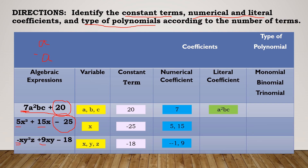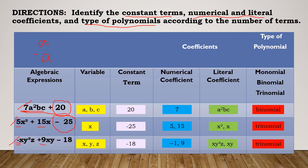For the literal coefficients, we write the variables with their exponents. The first term of polynomial 1 has literal coefficient a²bc. In the second polynomial we have x² and x. For the third polynomial, the first term has literal coefficient xy²z and the second term has xy. Since the first polynomial has two terms, it is a binomial. The second and third polynomials each have three terms, so both are trinomials.